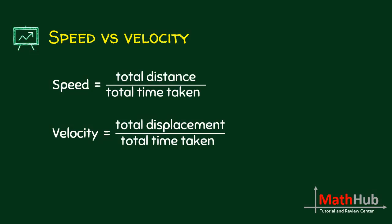What is speed versus velocity? Speed is the formula: total distance over total time taken. Whereas for velocity, we are looking at the displacement over the total time taken. We have already discussed the difference between distance and displacement. If you divide distance by time, you get speed. If you divide displacement by time, you get velocity.